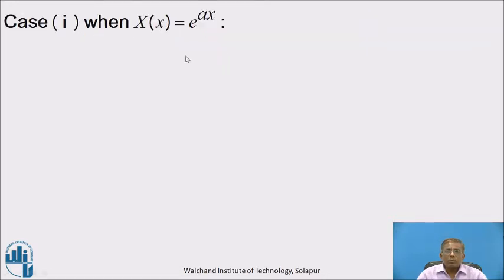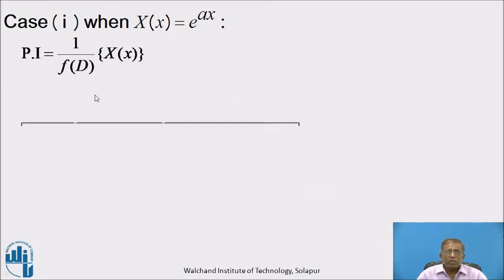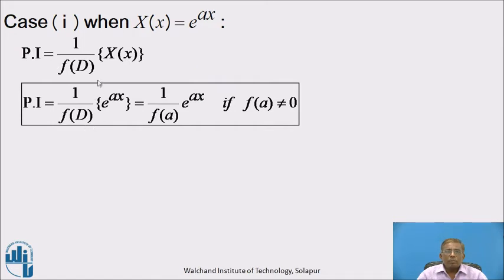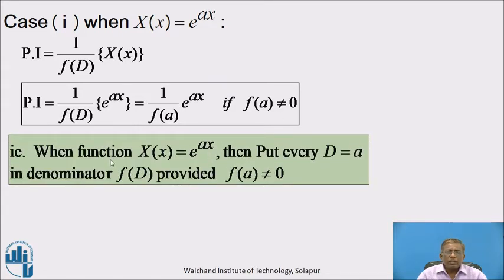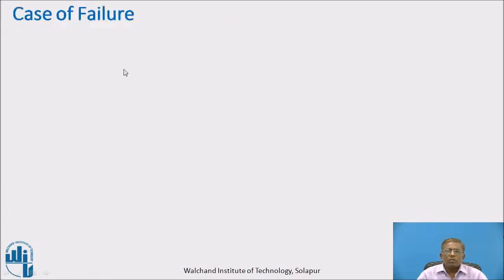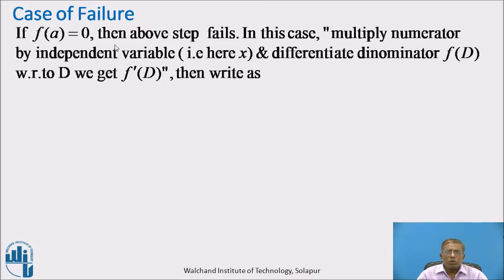Case 1: when X(x) = e^(ax). Since PI = 1/f(D) · X(x), we have PI = 1/f(D) · e^(ax). To simplify this, put every D equal to a in the denominator f(D). So we get PI = 1/f(a) · e^(ax), if f(a) ≠ 0. That means when X(x) is an exponential function of the type e^(ax), put every D equal to the constant coefficient a in the denominator f(D), provided f(a) ≠ 0.